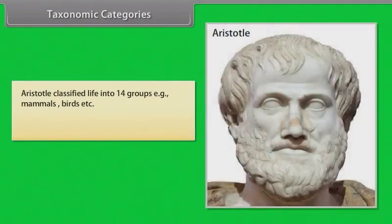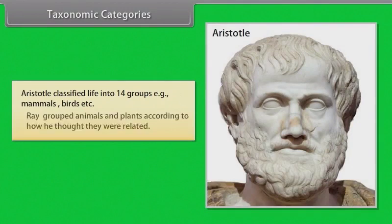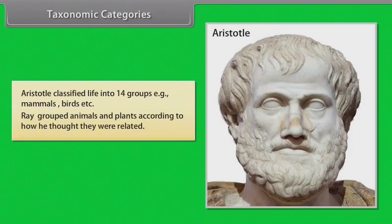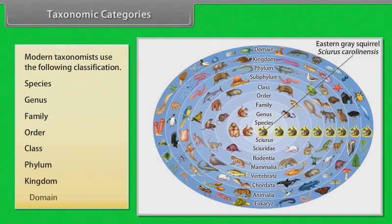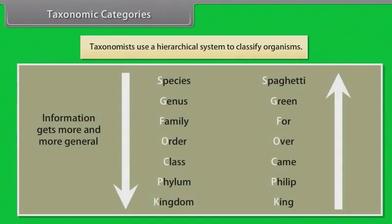Aristotle classified life into 14 groups, such as mammals and birds. Ray grouped animals and plants according to how he thought they were related. Modern taxonomists use the following classification: species, genus, family, order, class, phylum, kingdom, and domain. Taxonomists use a hierarchical system to classify organisms.